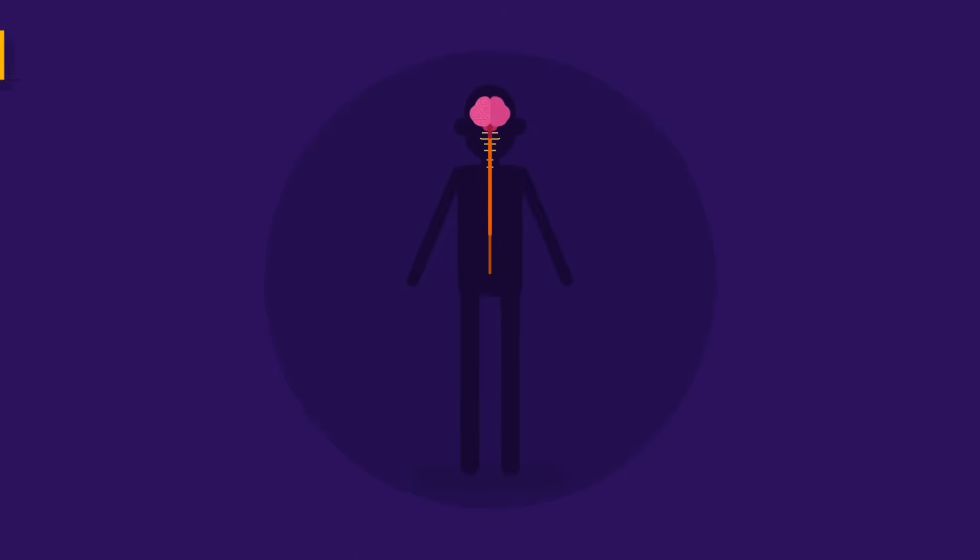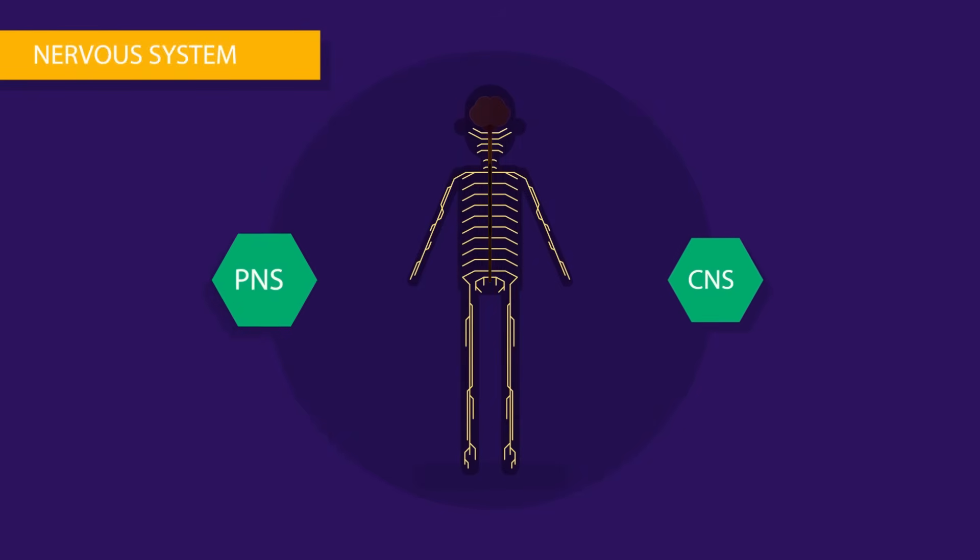Brain comes under a system called nervous system. Structurally, nervous system is classified into two types: Central nervous system (CNS) and peripheral nervous system (PNS).